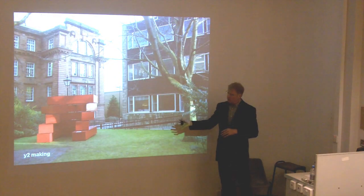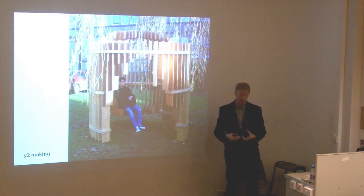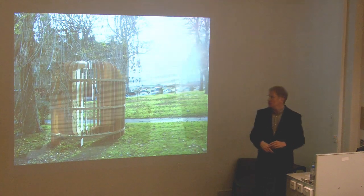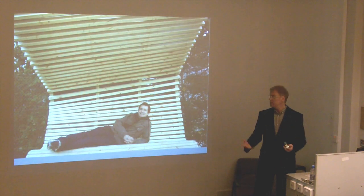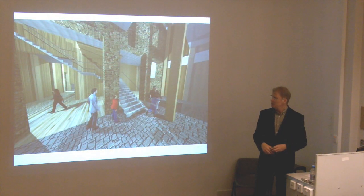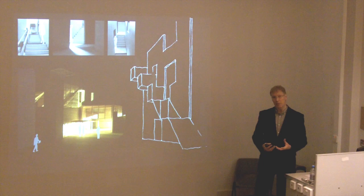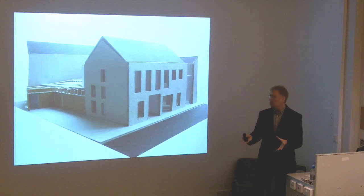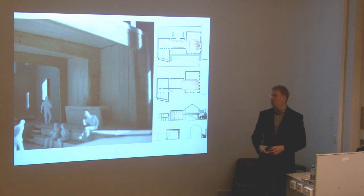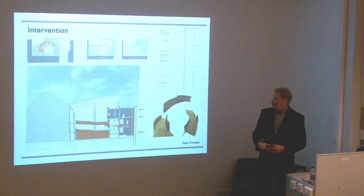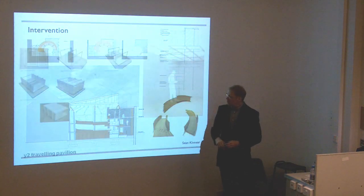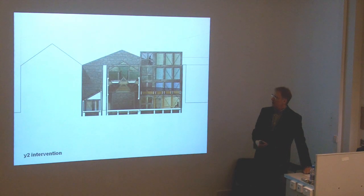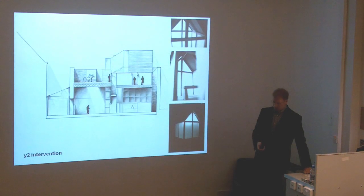Year two is where the students start to investigate how things are made, how things are constructed. They might do a little exercise in timber structure — so they actually build things. It becomes a little bit more hands-on in year two. Also in year two, we start to investigate the city a bit more — we might do an intervention project where we're given a brief that's probably too large for the existing building, and you have to break out of it and negotiate with the city. Things are starting to become more challenging in terms of the detail of investigation and the technological resolution.